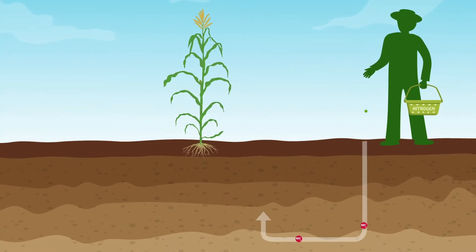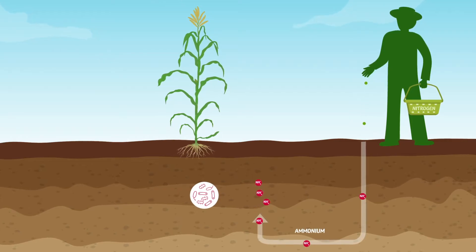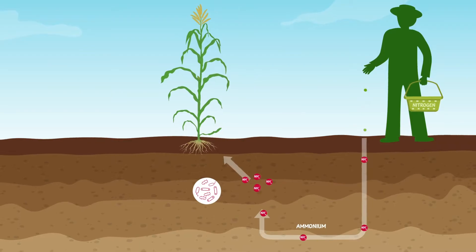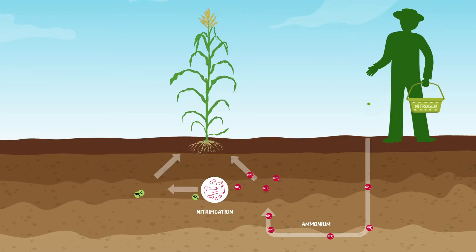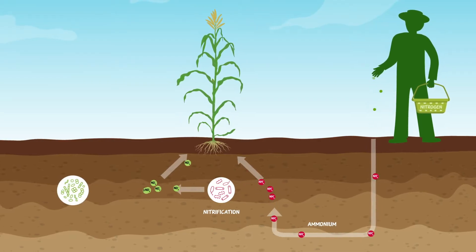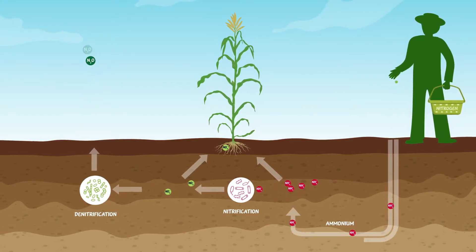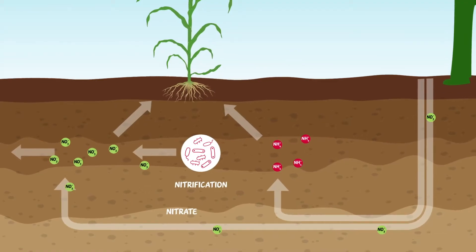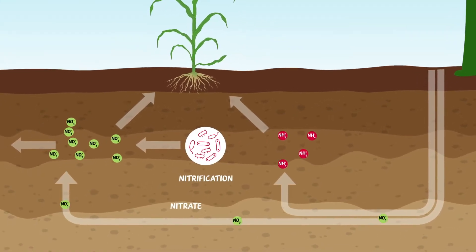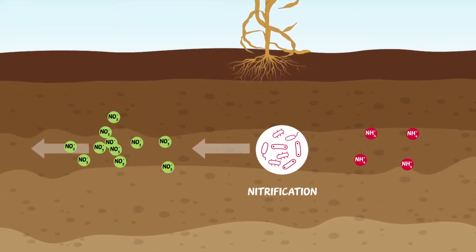Nitrous oxide is formed as an intermediate product of microbial nitrogen conversion in the soil — that is, the conversion of ammonium not immediately used by plants to nitrate (nitrification), and the conversion of nitrate to nitrogen gas (denitrification). The main driver of nitrous oxide emissions is a lack of synchronization between nitrogen supply and nitrogen demand by plants, leading to nitrogen excess in the soil.